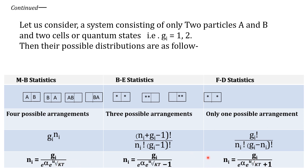These are the main points of comparison between Maxwell-Boltzmann statistic, Bose-Einstein statistic, and Fermi-Dirac statistic.